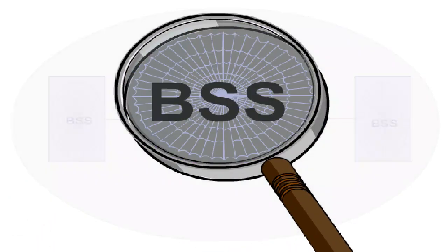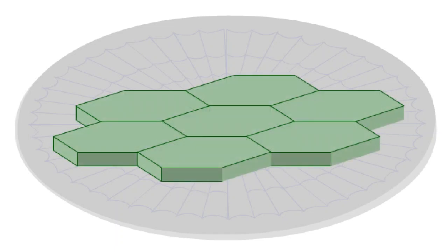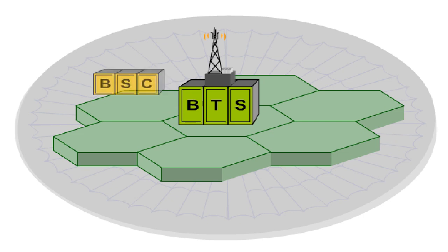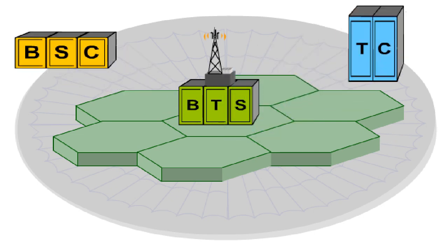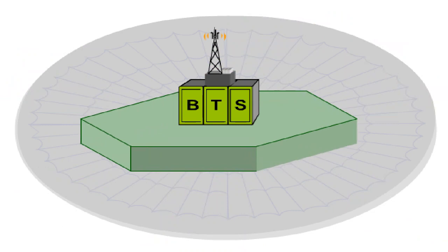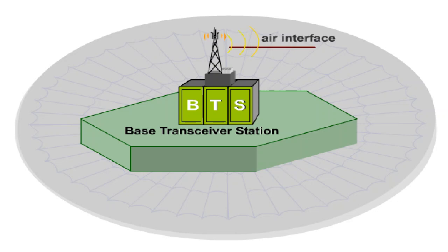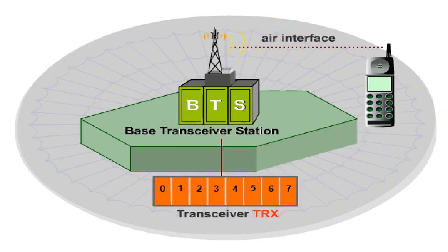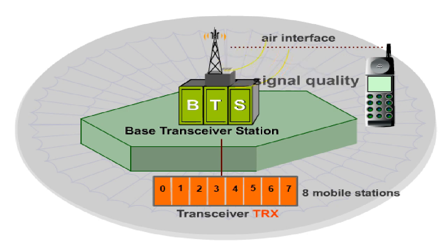The base station subsystem ensures as complete a network coverage as possible and includes a large number of structurally organised radio cells. It consists of the following elements: the base transceiver station, the base station controller, and the transcoder. The central element of one cell is a transmitting and receiving unit known as a base transceiver station, BTS. This makes the connection to the mobile station via the air interface and controls the transceiver, TRX. The transceiver, the central functional unit of the BTS, maintains calls to a maximum of eight mobile stations via one frequency pair each. The BTS is also responsible for monitoring signal quality and the encoding and modulation of useful signals.